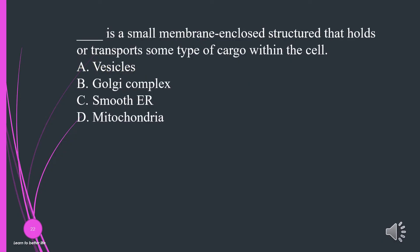What is a small membrane-enclosed structure that holds or transports some type of cargo within the cell? A. Vesicles. B. Golgi complex. C. Smooth ER. D. Mitochondria. The answer is A, vesicles.